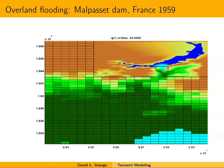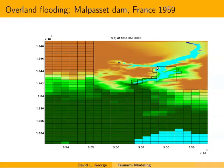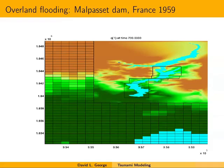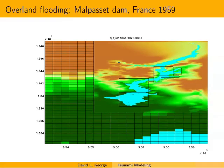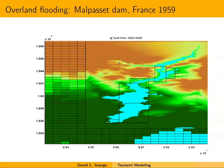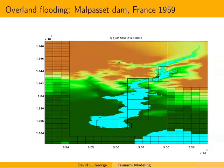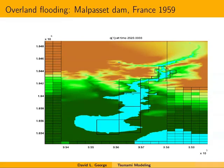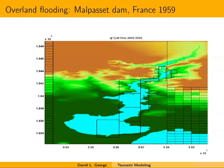That last simulation was zoomed in on the dam area, but we can simulate over fairly large domains with the help of AMR. If one were to use a topography-fitted mesh for this rugged region, it would be expensive to compute and difficult to generate accurately. With AMR we can create fairly fine grids on the fly as the computation proceeds.